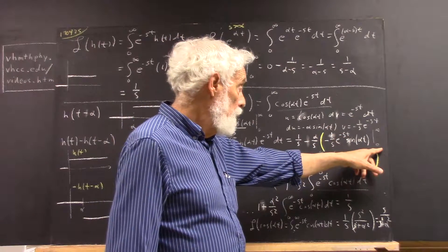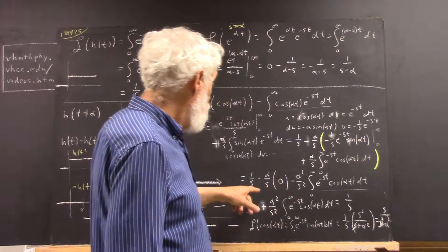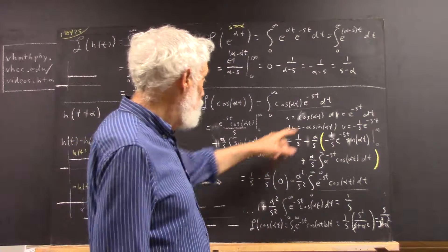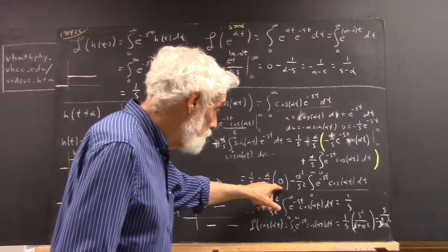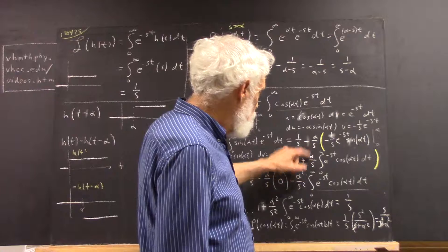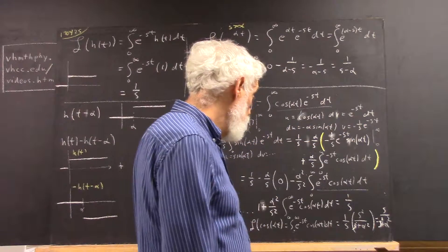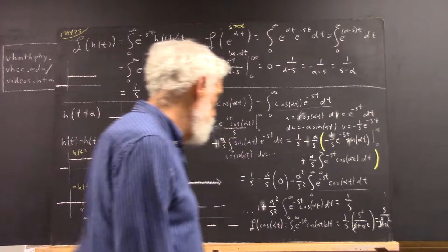And, evaluated at zero, the sine gives us zero because we have a sine of zero. So, this term is going to give us negative alpha over s times this. It's going to be negative alpha over s times zero. But then, we're going to have a negative alpha squared over s squared, distributing through by the multiplication by the negative alpha over s, times the integral of e to the negative s t cosine of alpha t dt.